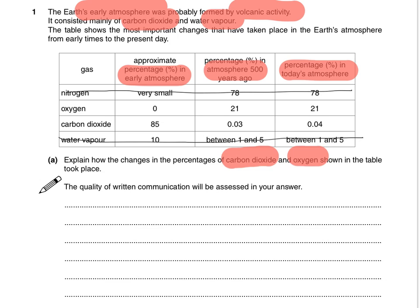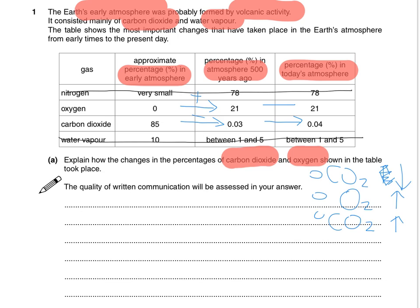What we'd then do is have a look at how it's changing. Oxygen increases and then stays the same. Carbon dioxide decreases and then increases in the last 500 years. So we're basically going to be explaining three things, structuring this answer so that we explain the CO2 decrease, the oxygen increase, and then most recently the CO2 increase — probably in that chronological order.